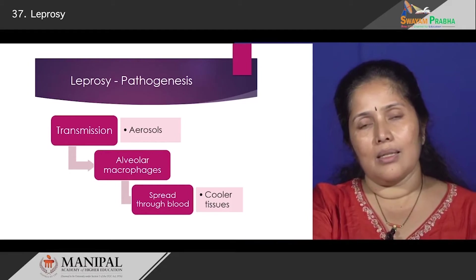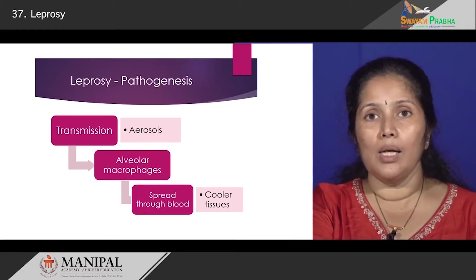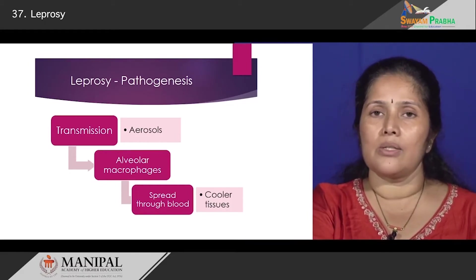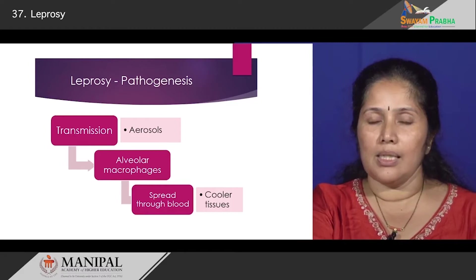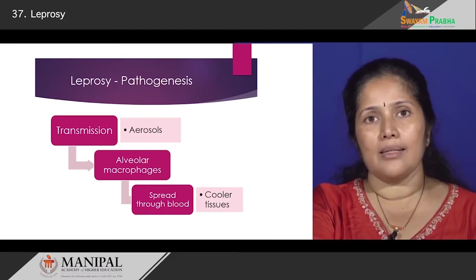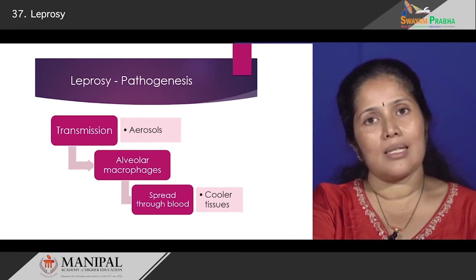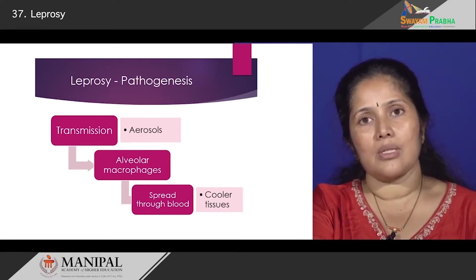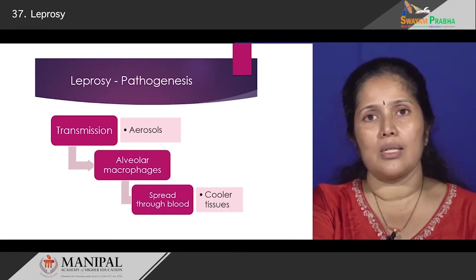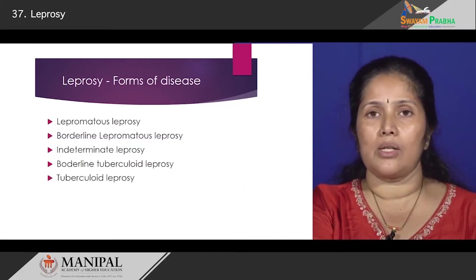An interesting thing is that these bacilli can proliferate in cooler regions of our body, and that is why leprosy has a predilection for skin and nerves. As we go along, you will see that patients develop a lot of lesions in relation to the skin and in relation to the nerves.